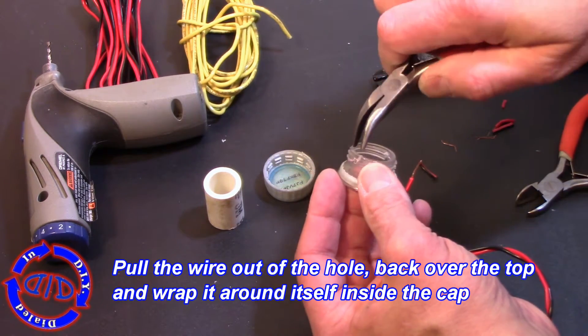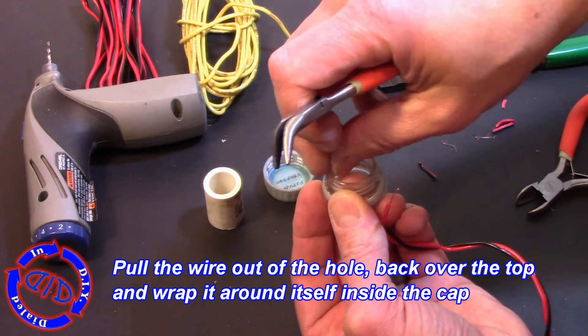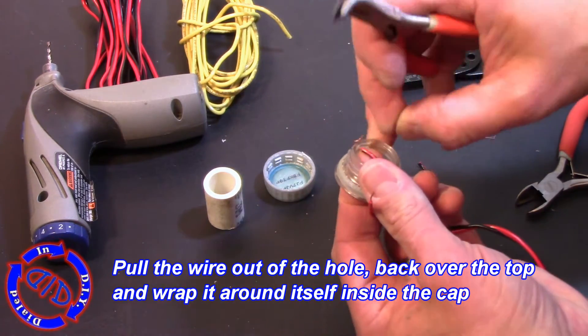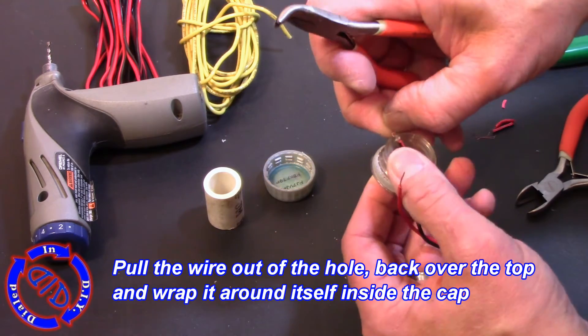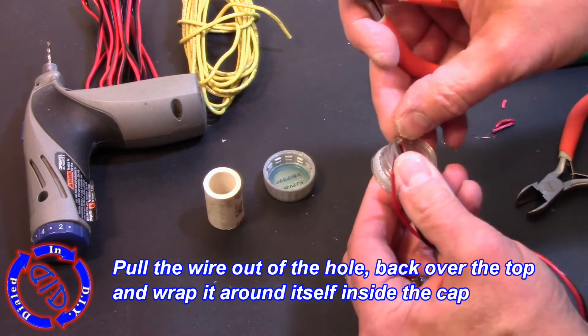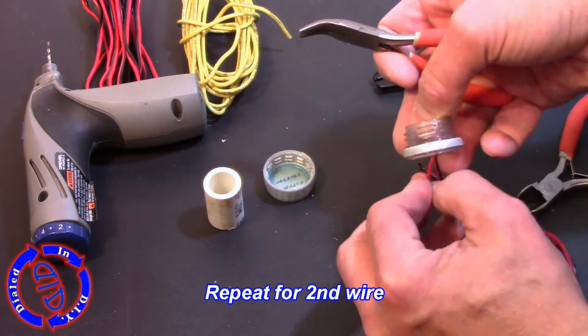Once it's through to the other side you're just gonna pull it out up and over the top and then twist it down around itself underneath the inside of that cap area. This will keep the wire secure and hold it in place when you're using it for a switch.